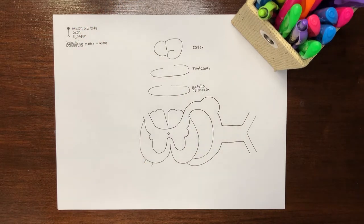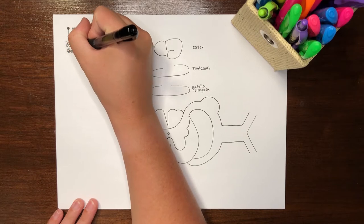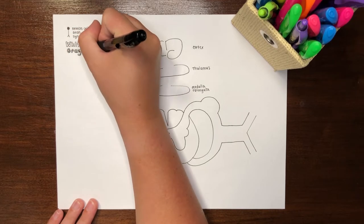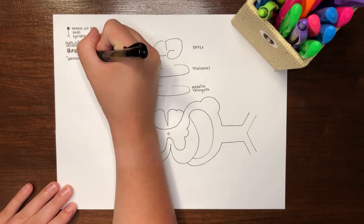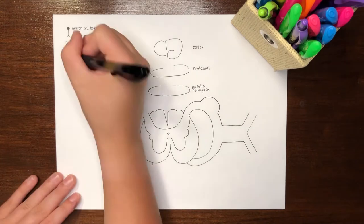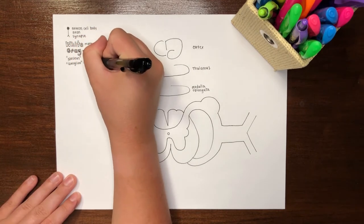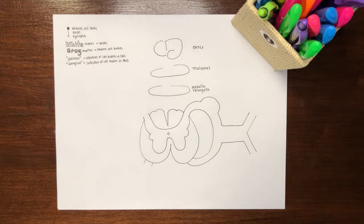These are the long, thin projections that perpetuate action potentials to downstream neurons or tissue. Gray matter is comprised of collections of neuron cell bodies, where the nucleus of the cell resides. The word nucleus can also be used to describe a discrete collection of neuron cell bodies in the central nervous system. A ganglion, on the other hand, is a conglomeration of neuron cell bodies in the peripheral nervous system. They often appear as bulges or plates of nervous tissue along a nerve.